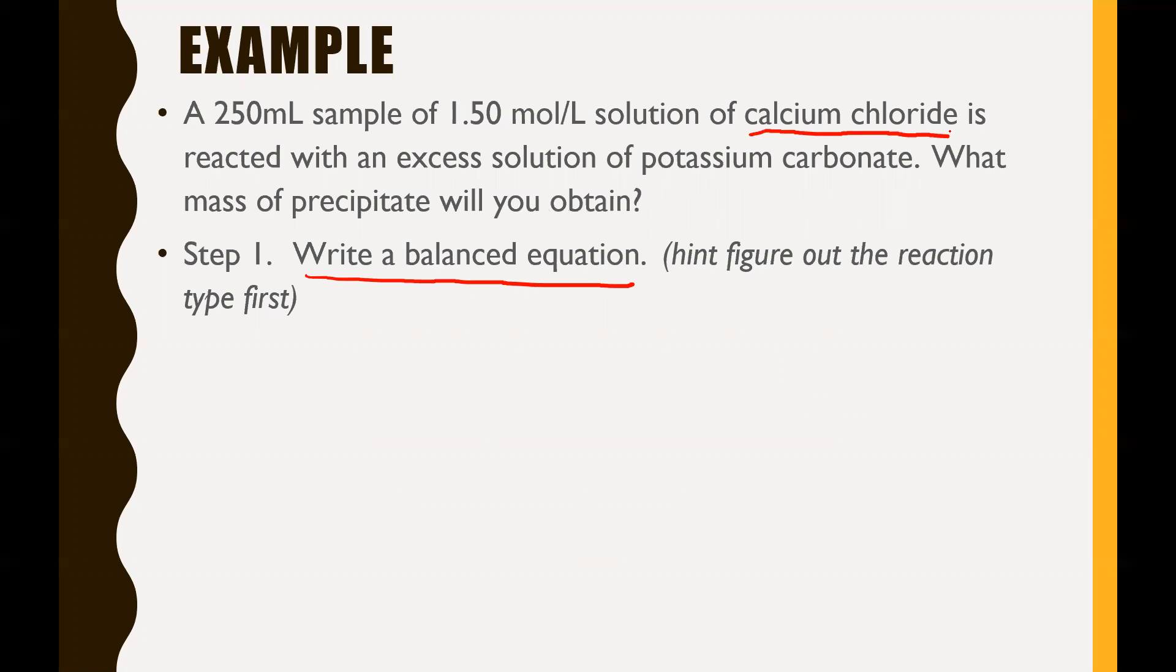First, notice we're combining calcium chloride with potassium carbonate. Calcium chloride is calcium and chlorine. That's an ionic compound, so calcium has a 2+ charge and chlorine has a 1- charge. Swap and drop, and you get CaCl2. Potassium carbonate - carbonate's a polyatomic ion, and potassium is K. Carbonate has a 2- charge and potassium is 1+. So swap and drop: K2CO3.